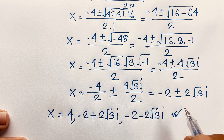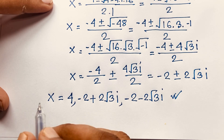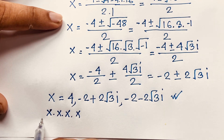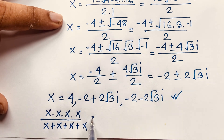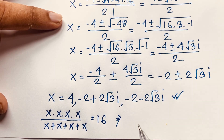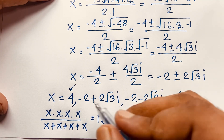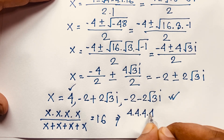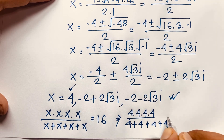Now let's check our answer. Our question is x times x times x times x times x over x plus x plus x plus x equals 16. We found the real solution x equals 4. Substituting: 4 times 4 times 4 times 4 times 4, over 4 plus 4 plus 4 plus 4, equals 16. Let's verify.